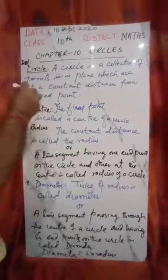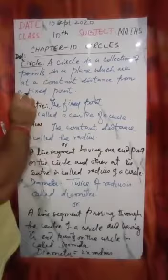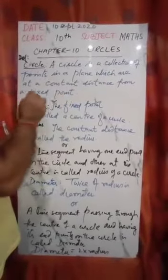So definition of circle is: a circle is a collection of all those points in a plane which are at constant distance from a fixed point.